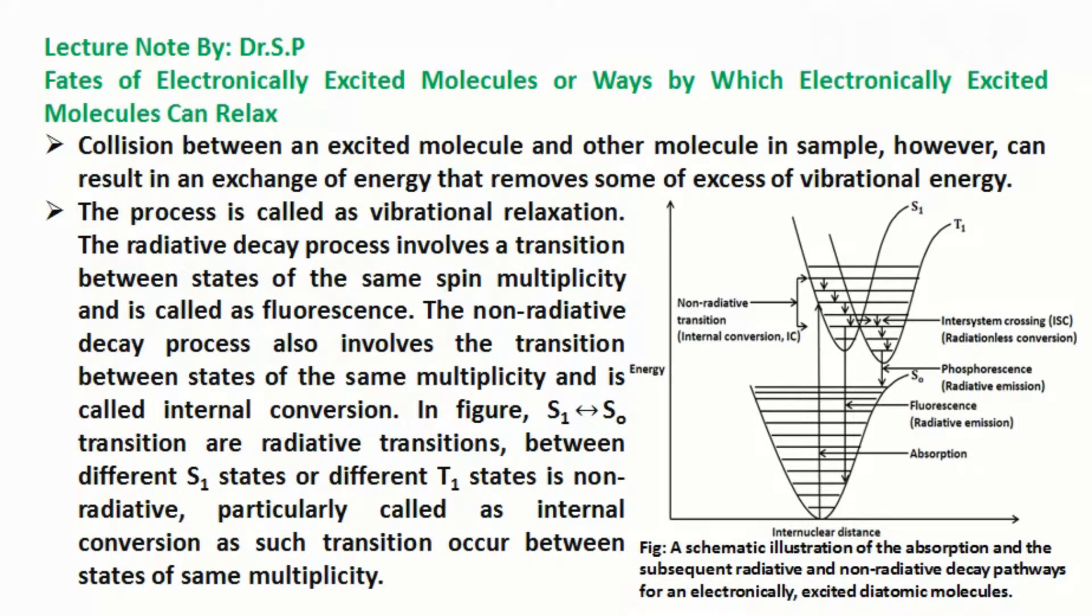The radiative decay process involves a transition between states of the same spin multiplicity and is called fluorescence. The non-radiative decay process also involves the transition between states of the same multiplicity and is called internal conversion.